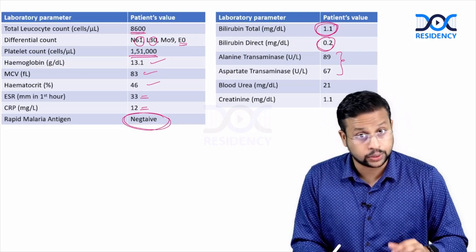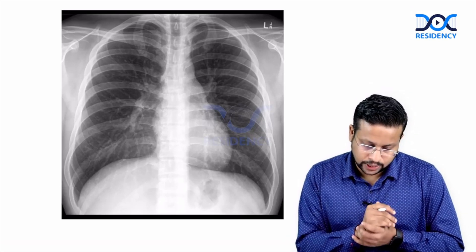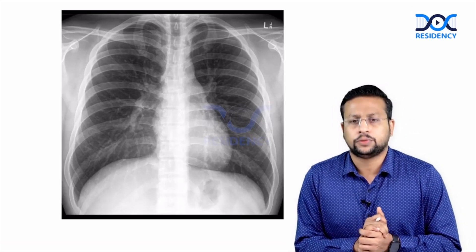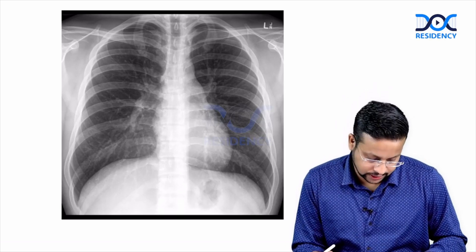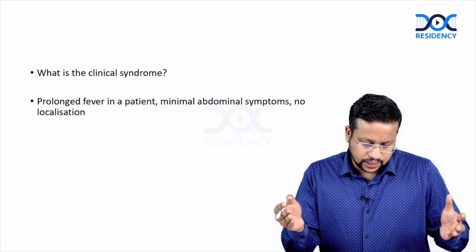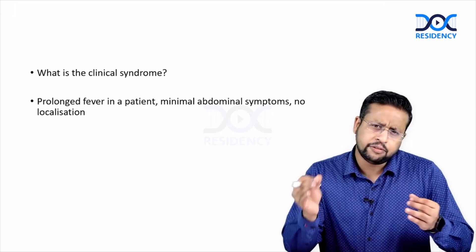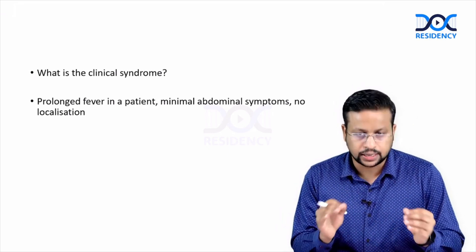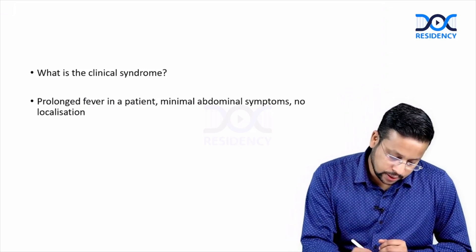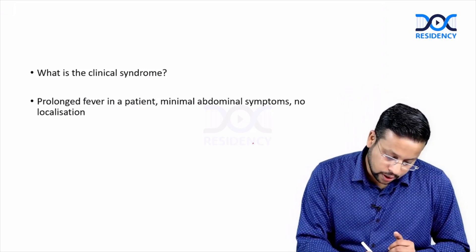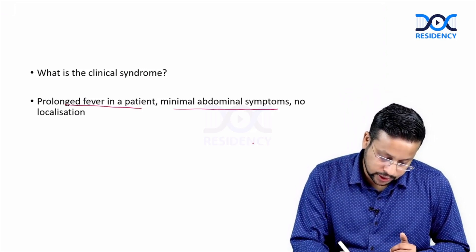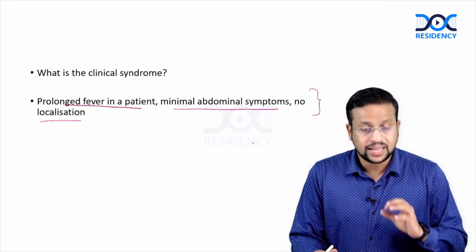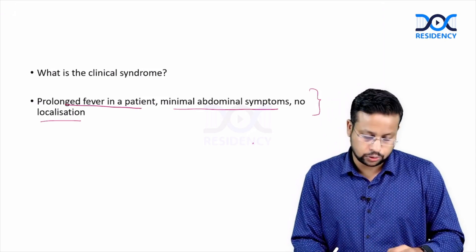So this is how most patients present to us with prolonged fever. What are the differentials? Before that, the chest X-ray was also provided — it is a normal chest X-ray, there is nothing abnormal. So the clinical syndrome is: prolonged fever in a patient with minimal abdominal symptoms and no localization. Every time you have a case in clinical medicine, make a clinical diagnosis first, then form differential diagnoses.